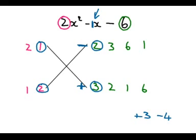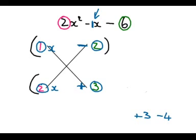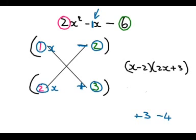Which means that will be the minus, and that will be the plus. And we'll put the X there. And we don't need that or that. And there we've got the two brackets. So it's X minus 2, and 2X plus 3.